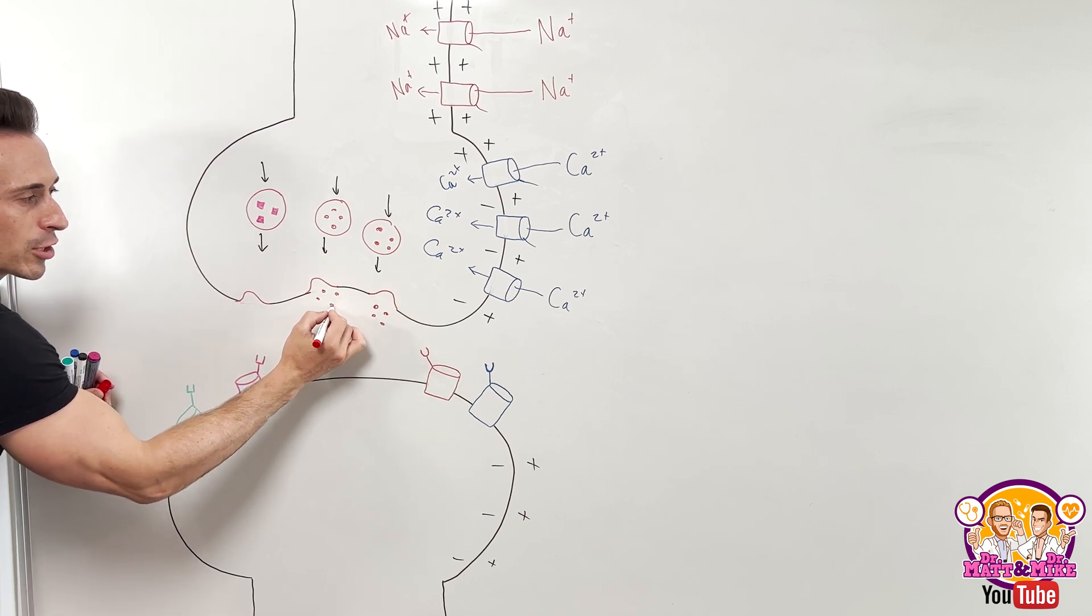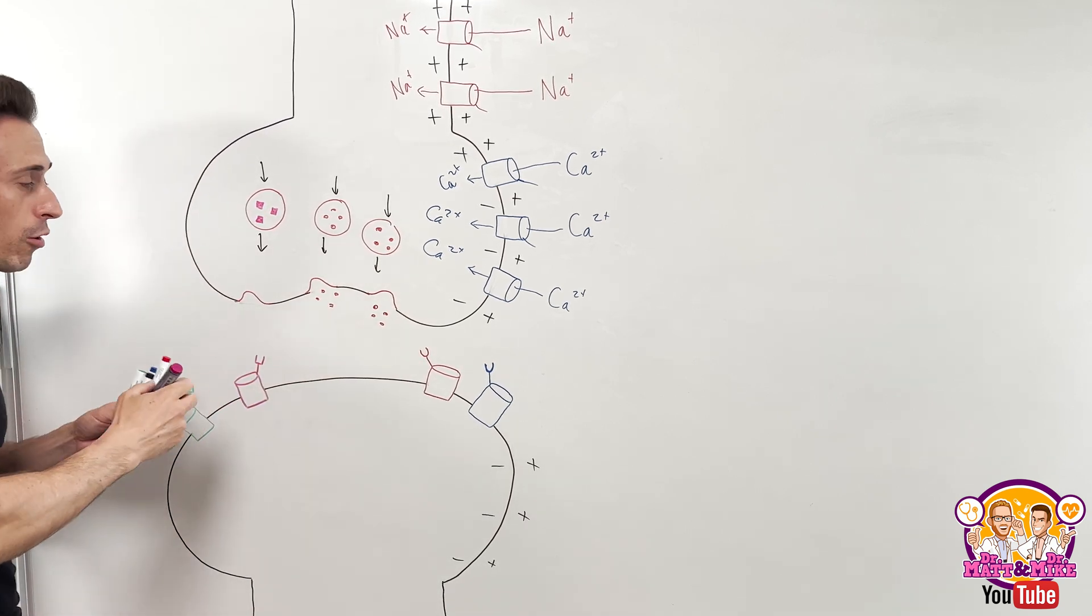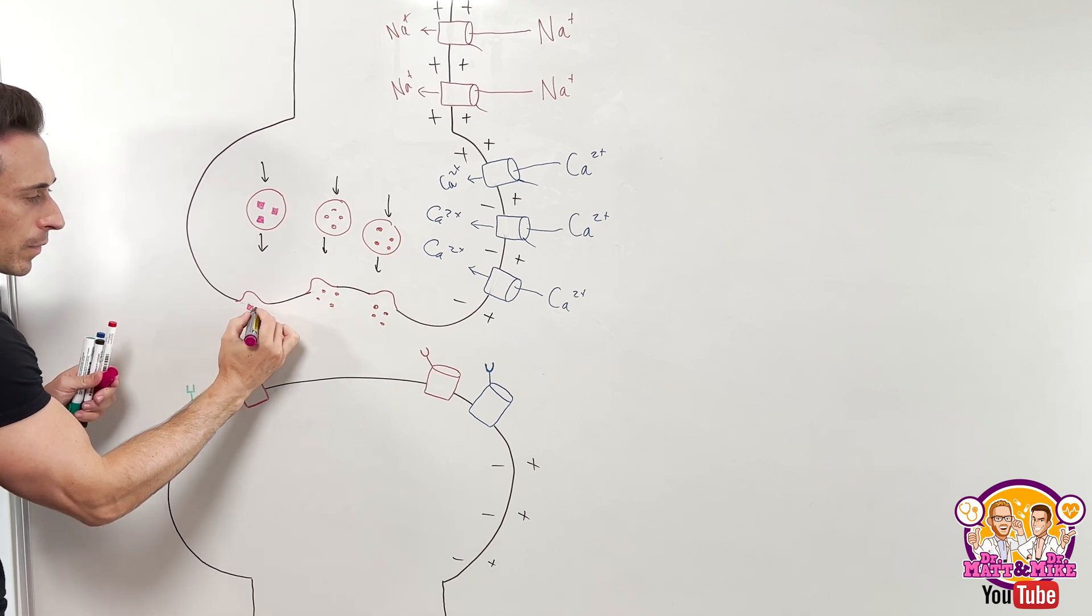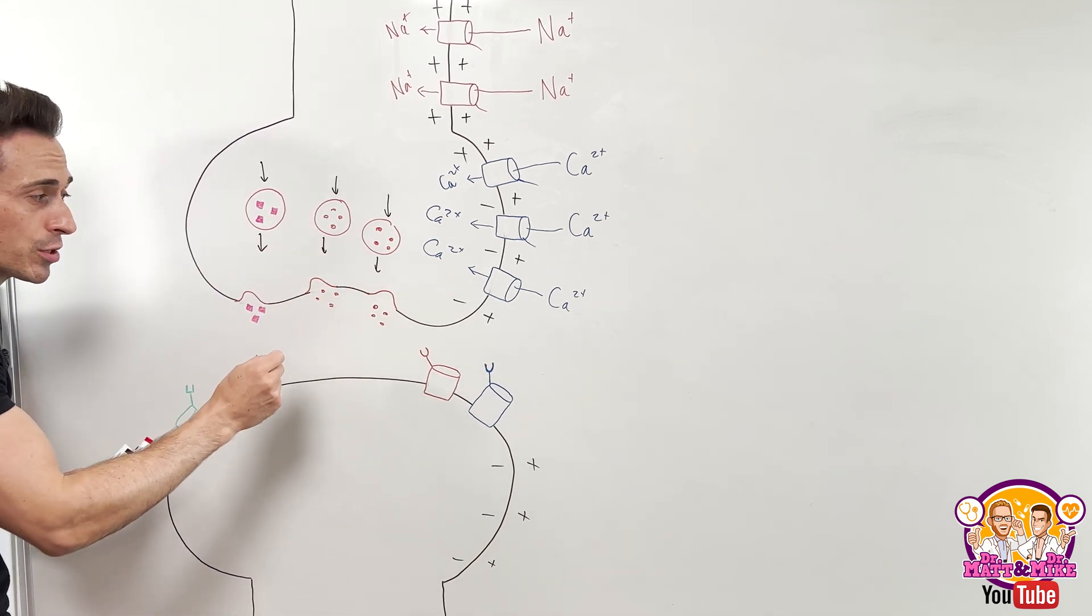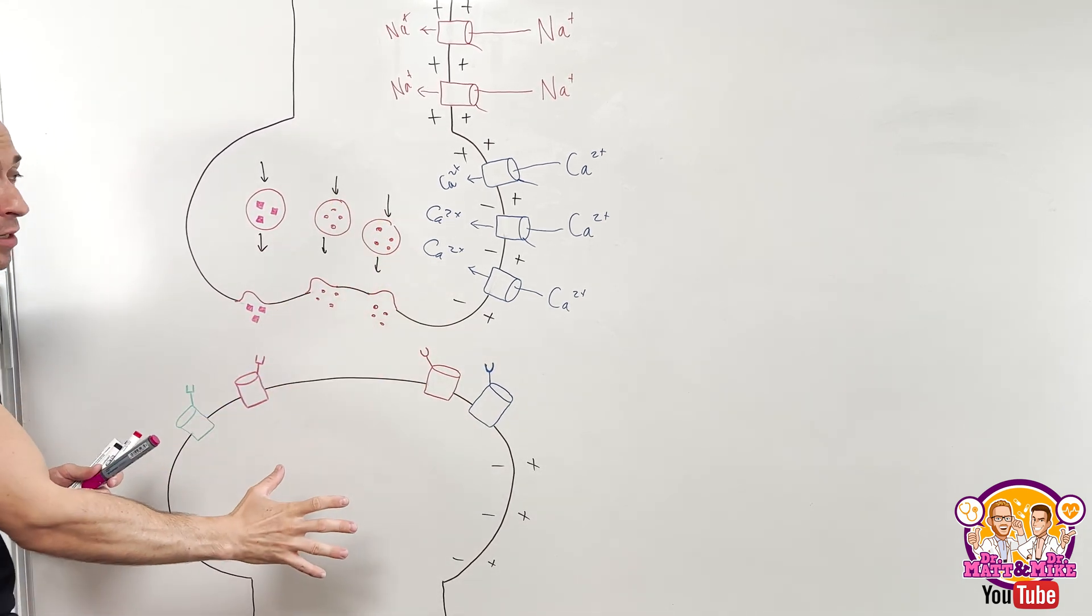And like I said, it might be excitatory neurotransmitters or it might be inhibitory. Now again, diffusion comes into play here. It's now just released chemicals into a gap between two cells.